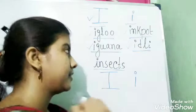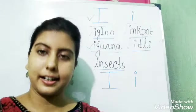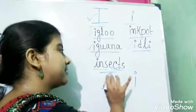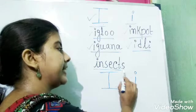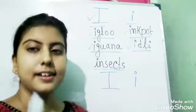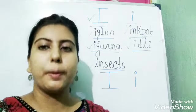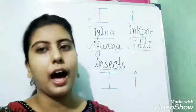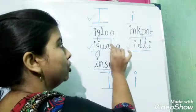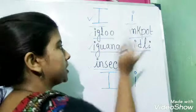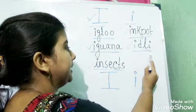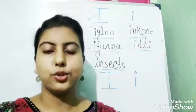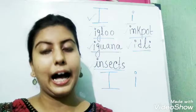And the last word is insects. I-N-S-E-C-T-S. Insects. I am repeating these words, please repeat after me. Igloo, ink pot, iguana, idli, insects. So this was all about I.